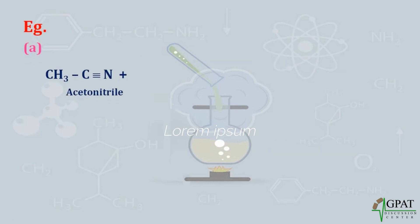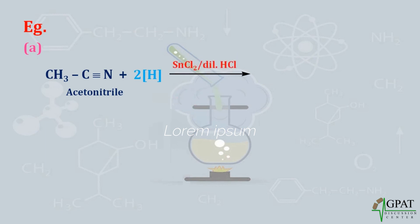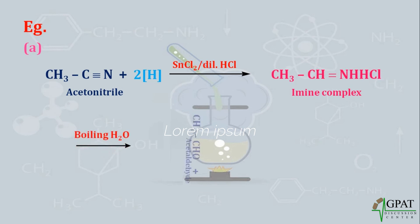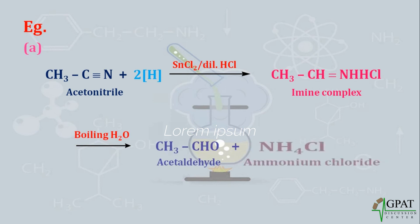Let's take an example. Acetonitrile on reduction in the presence of stannous chloride with diluted HCl forms an imine complex intermediate. This imine complex on hydrolysis with boiling water forms acetaldehyde, as well as the side product ammonium chloride.